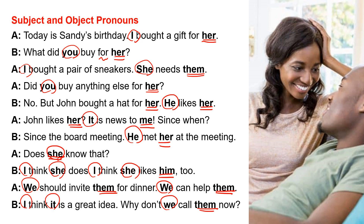Let's practice pronunciation. Today is Sandy's birthday. I bought a gift for her. What did you buy for her? I bought a pair of sneakers. She needs them. Did you buy anything else for her? No. But John bought a hat for her. He likes her — 'likes' is pronounced 'liked', and in 'her', the H is silent: 'likes her'. John likes her? It is news to me. Since when? Since the board meeting. He met her — the H is silent: 'met her' — at the meeting.